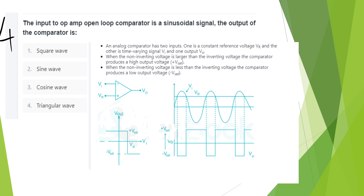The 4th question: The input to the op-amp open loop comparator is a sinusoidal signal. The output is a square wave. In an open loop comparator, there are two inputs — one is a constant reference voltage Vr, and the other is the input signal. The output is V0. When the non-inverting voltage is greater than the inverting voltage, the output is high (+Vz). When the non-inverting voltage is less than the inverting voltage, the output is low.